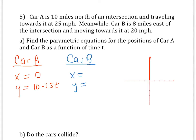Meanwhile, you have car B that's 8 miles east, and it's traveling towards the intersection as well. So it's moving along the x-axis like this. So can you find the parametric equations for car B? So I get 8 minus 20t for x. Now notice the y coordinate is always 0.